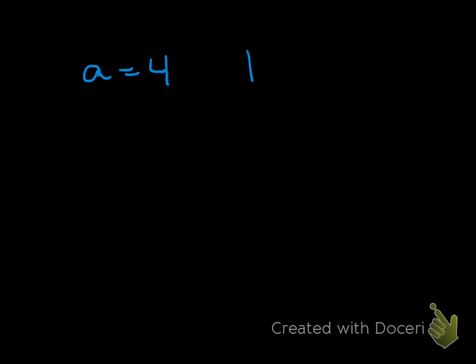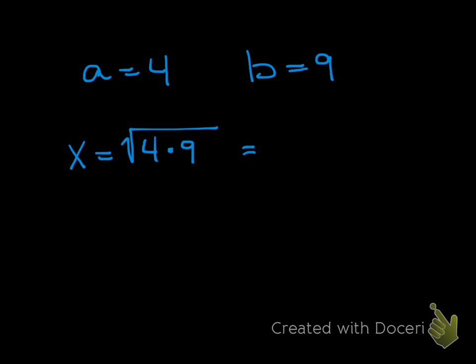Last one: a equals 4 and b equals 9. The geometric mean of 4 and 9 is x equals the square root of 4 times 9. We can simplify that to the square root of 36, which equals 6. So the geometric mean of 4 and 9 is 6.